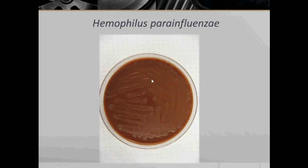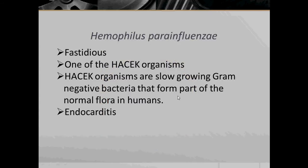Here we see Haemophilus parainfluenzae growing on chocolate agar. Haemophilus parainfluenzae are fastidious and are one of the HACEK organisms. HACEK refers to a grouping of Gram-negative bacilli where each letter represents a different bacterial species: H represents Haemophilus species, A represents Actinobacillus actinomycetemcomitans, and C represents Cardiobacterium hominis.